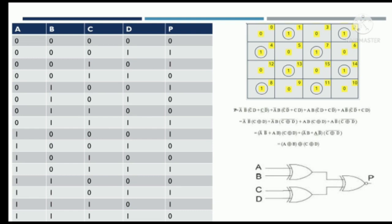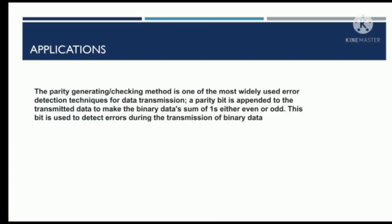Three XOR gates are needed to construct the even parity checker. In the first XOR gate, A and B are inputs giving output A XOR B. In the second XOR gate, C and D are inputs giving output C XOR D. Both outputs are applied as inputs to the third XOR gate, giving the final output P = A XOR B XOR C XOR D.